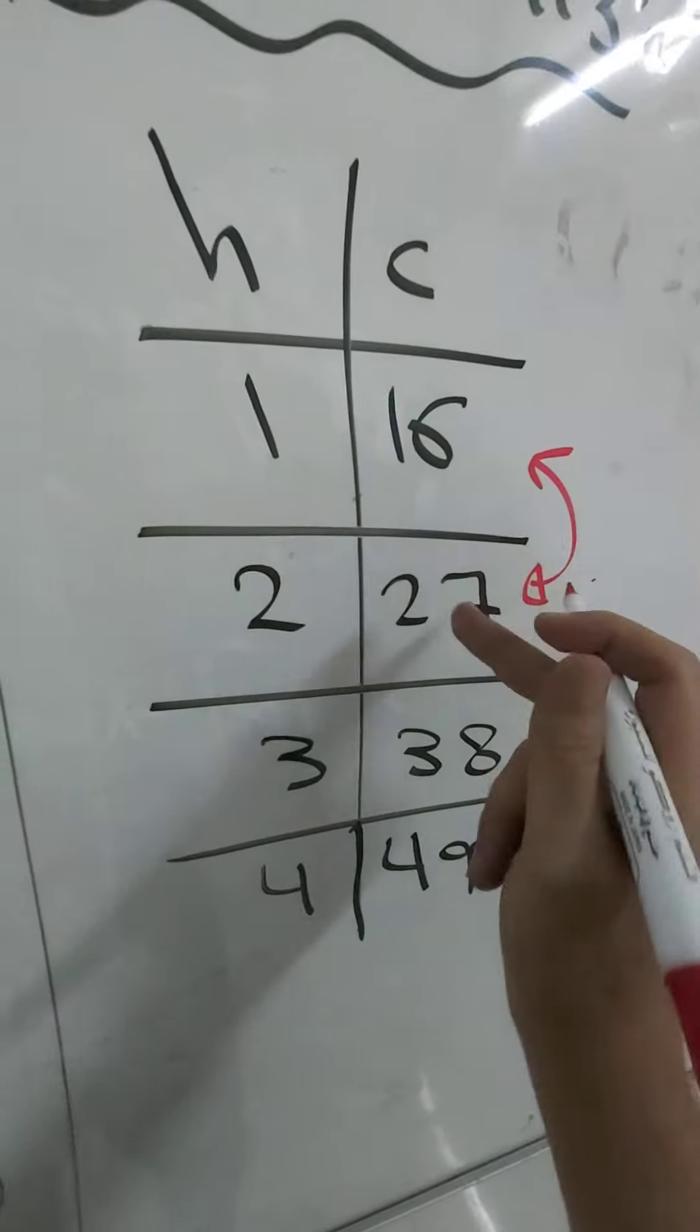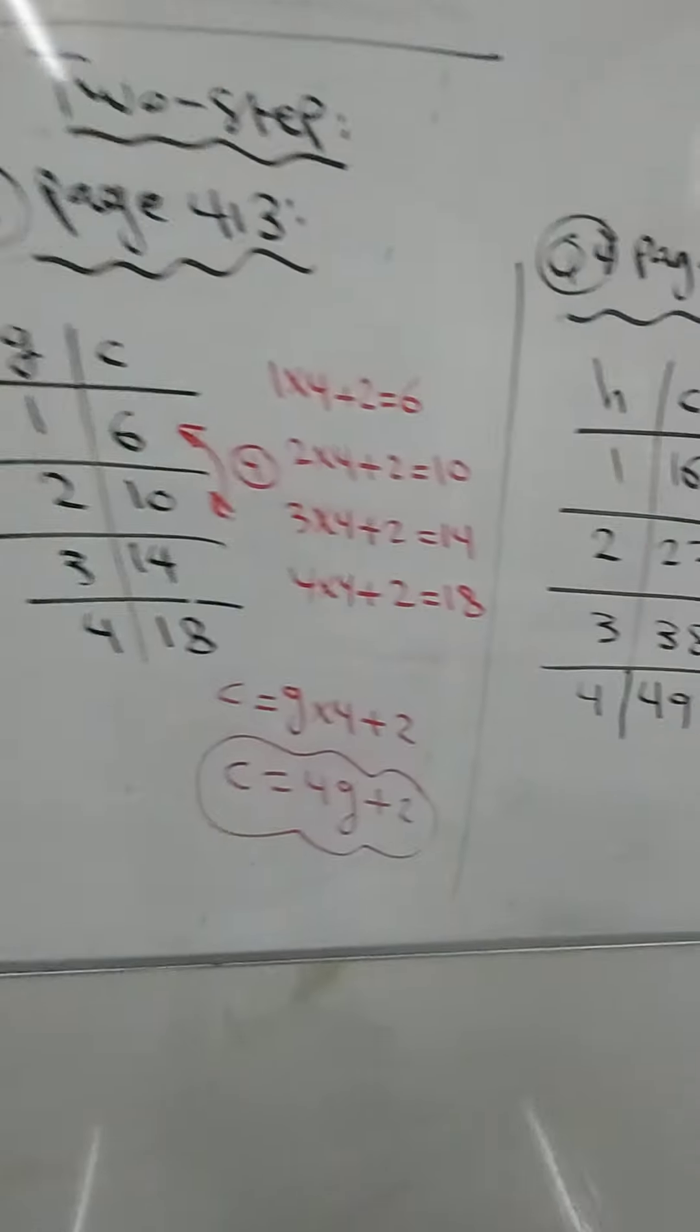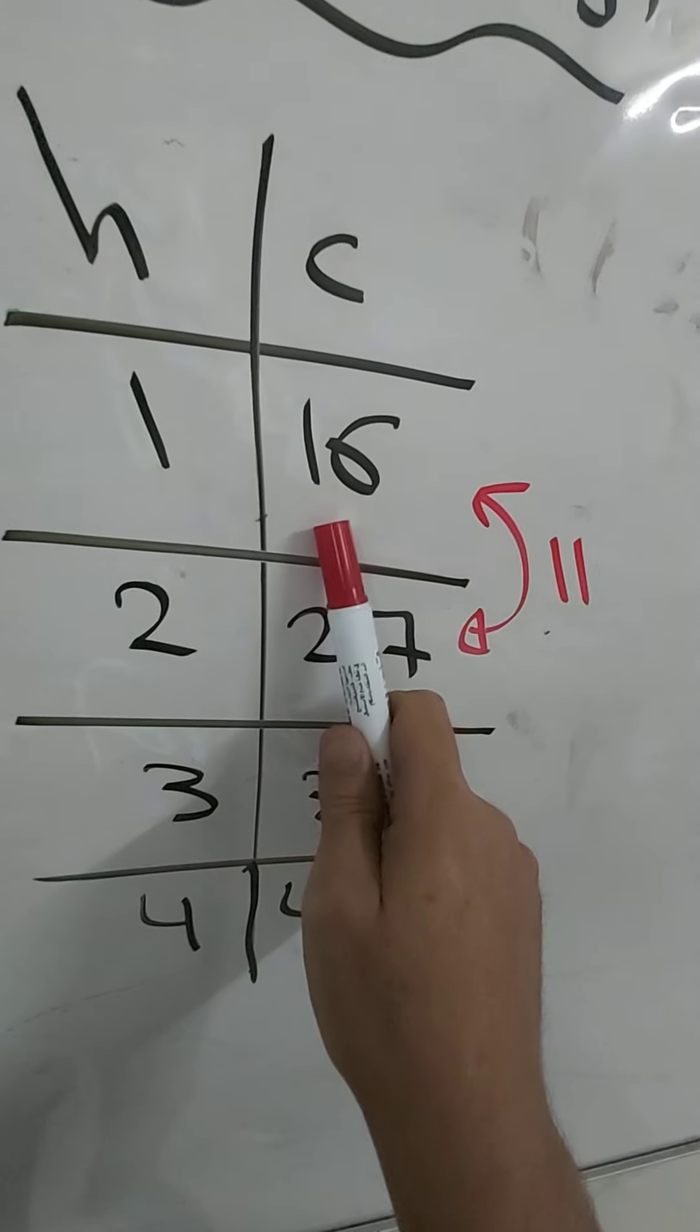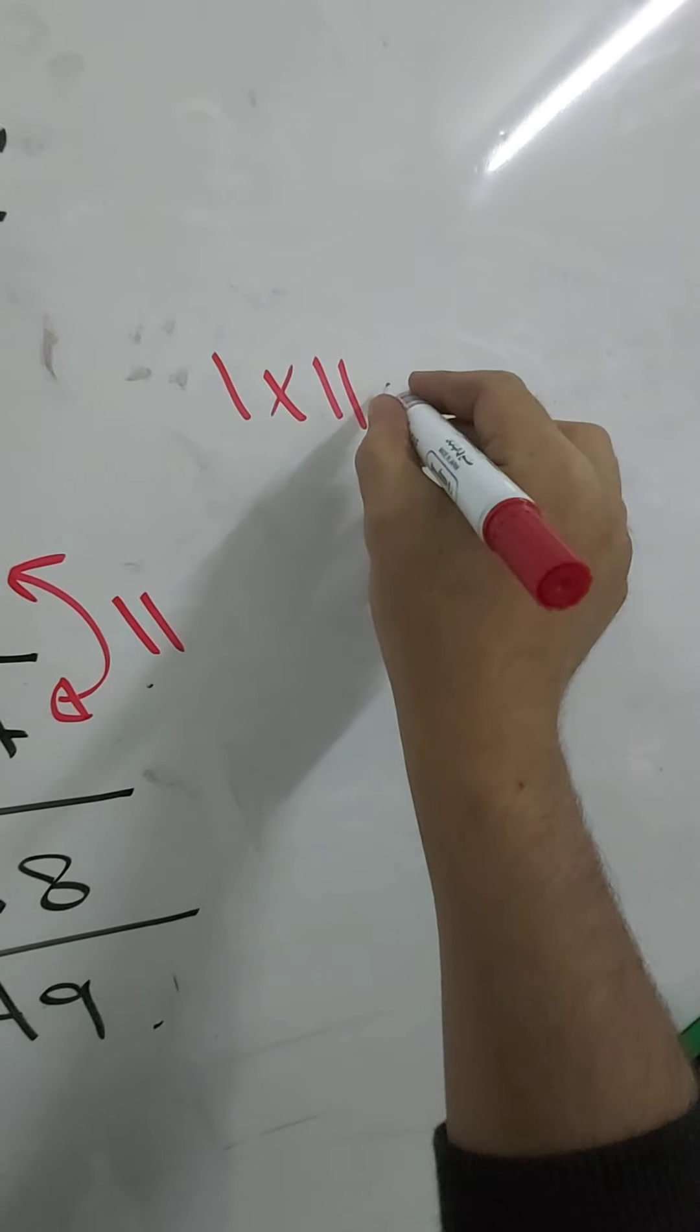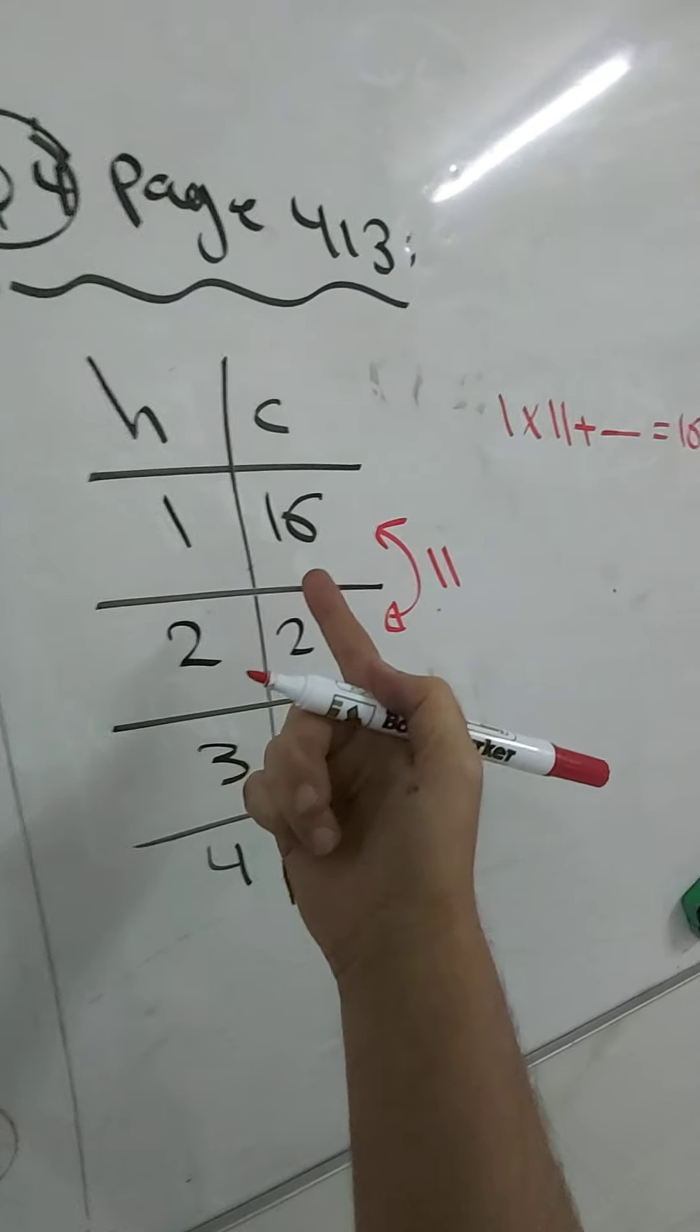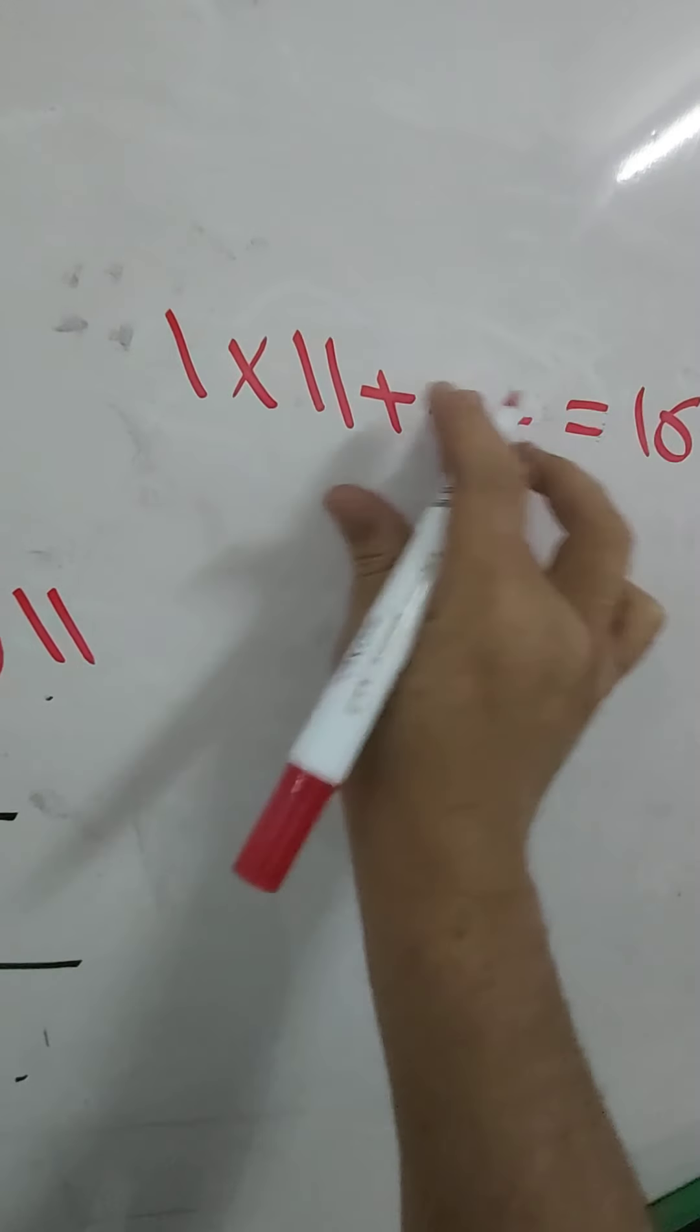27 minus 16 is 11, and I will do the process which I did here. One multiply 11 is 11. How much does it need to be 16? It needs 5. So 11 plus what equals 16? It's 5.